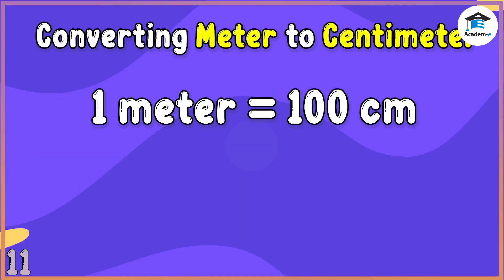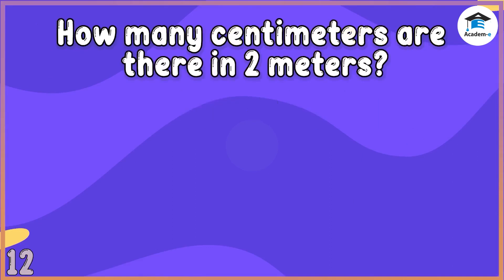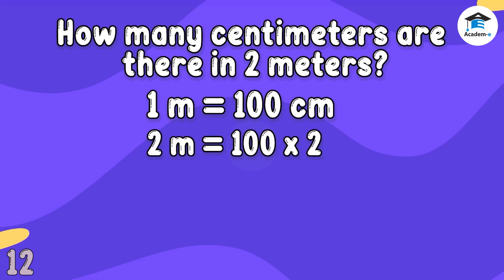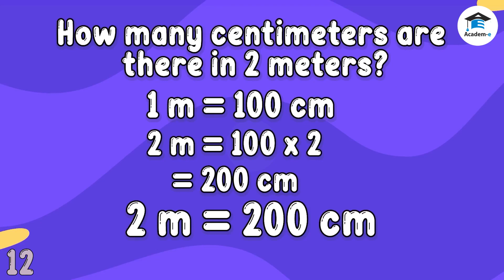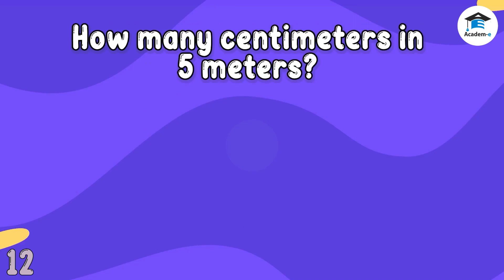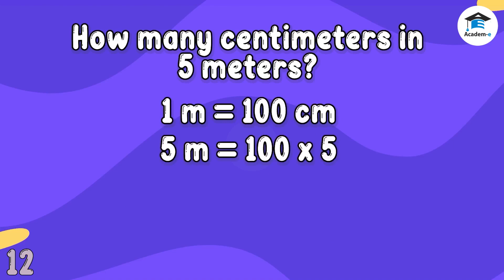Next, we move on to converting meters to centimeters. One meter is equal to 100 cm. To find the equivalent centimeters, multiply by 100. Example 1: How many centimeters are in 2 meters? 2 meters equals 100 cm times 2, which is 200 cm. Example 2: How many centimeters are in 5 meters? 5 meters equals 100 cm times 5, which is 500 cm.